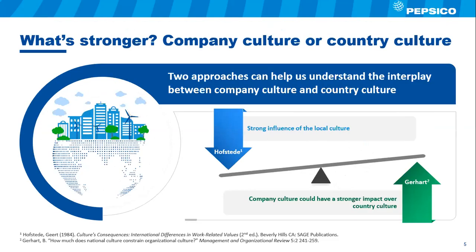When analyzing the impact of transformations at an organization, there are two major bodies of research — from Hofstede and Gerhardt — showing different ways to understand the role of culture in employee survey research. Hofstede's research found a strong impact of local culture on employee survey data and that cultural values impact employee behavior. On the other hand, Gerhardt argued that the stronger impact was the company's culture, exerting influence through policies, practices, and procedures, and therefore company culture would be stronger than local culture.